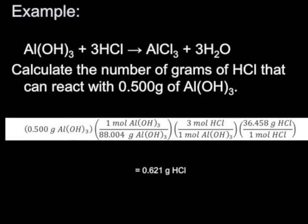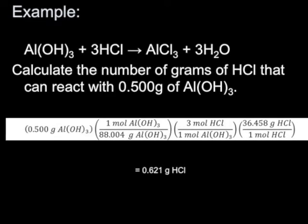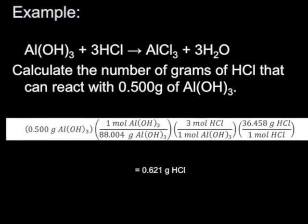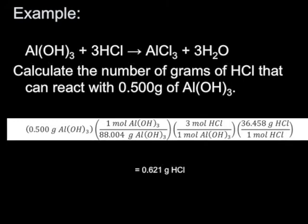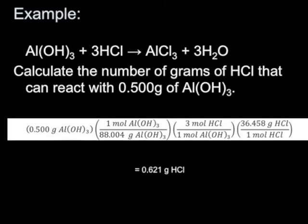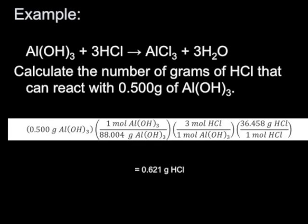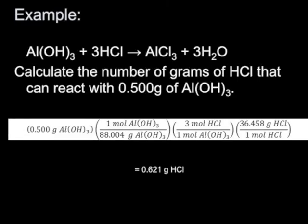One more example we can look at here with aluminum hydroxide with HCl to give us aluminum chloride and water. Now in this problem we want to calculate the grams of HCl that can react with 0.5 grams of aluminum hydroxide. So in this case, we're not interested so much in the products, but we want to know how much of another reactant we have. But we're still going to go through this mole-to-mole ratio because the balanced chemical equation gives us a relationship of moles. So if we figure out how many moles of aluminum hydroxide we have, we can then figure out how many moles of HCl we need to react with that and then convert it back to mass. So you can see it here.